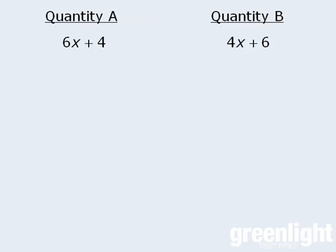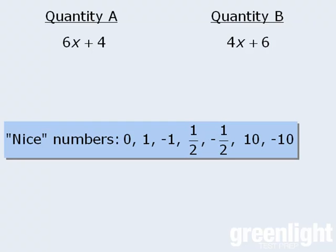A nice set of numbers to choose from are 0, 1, negative 1, 1 half, negative 1 half, 10 and negative 10, since they represent a nice cross-section of all numbers.